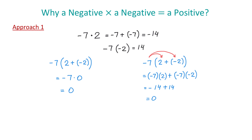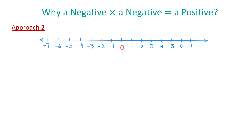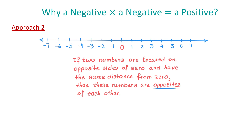Now, let's see the second approach. With this approach, we will use the number line to define opposite numbers. If two numbers are located on opposite sides of 0 and have the same distance from 0, then these numbers are opposites of each other. For example, negative 7 and positive 7 are opposites of each other. We can say that the opposite of 7 is negative 7, and the opposite of negative 7 is positive 7.